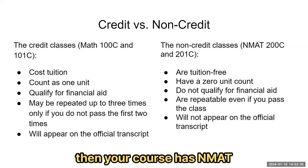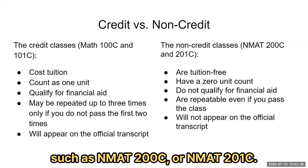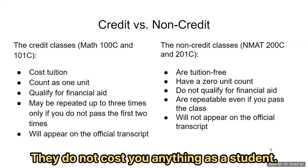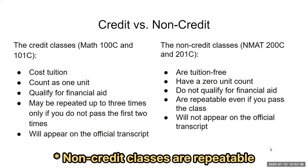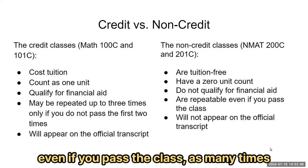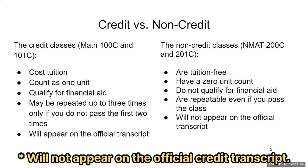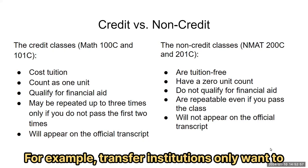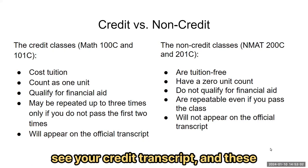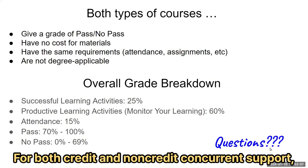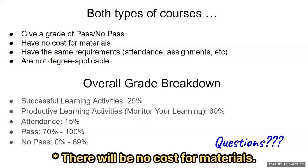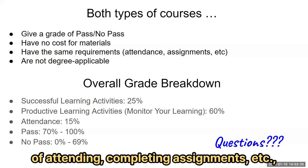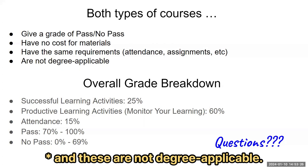If you are taking the class for non-credit, your course has NMAT as a descriptor in Class Web, such as NMAT 200C or NMAT 201C. Non-credit classes are tuition free — they do not cost you anything as a student. They have a zero unit count and therefore do not qualify for financial aid. Non-credit classes are repeatable even if you pass, as many times as you want. These will not appear on your official credit transcript — for example, transfer institutions only want to see your credit transcript. For both credit and non-credit concurrent support, you will have a grade of pass or no pass, there will be no cost for materials, and these are not degree applicable.